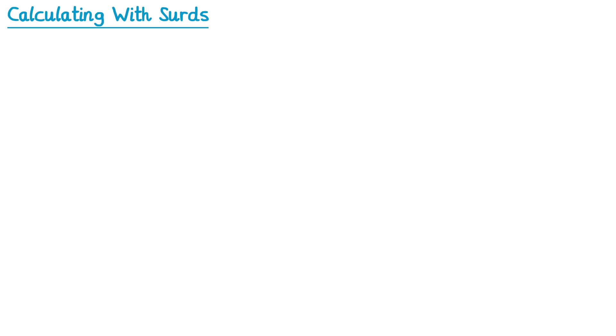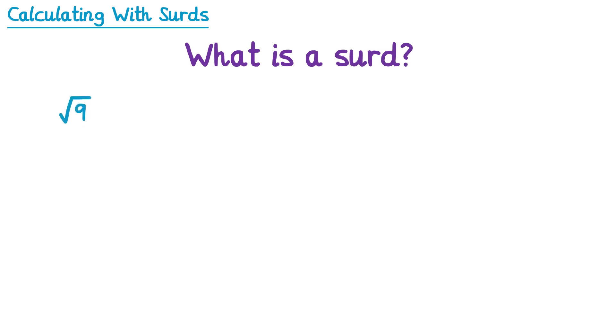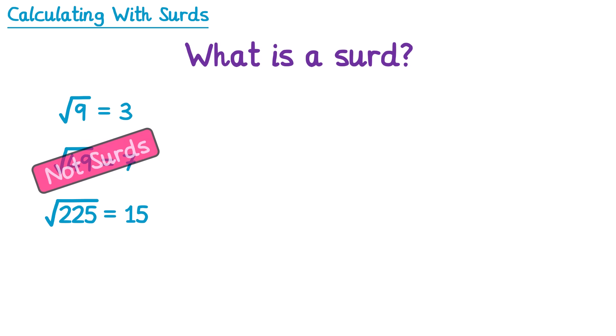In this video we're going to learn how to calculate with surds, but first we need to answer the question: what is a surd? If you do the square root of 9, you get an integer answer — that's 3. The square root of 49 is also an integer, 7, and the square root of 225 is 15. All of these give integer answers, so they're not considered surds.